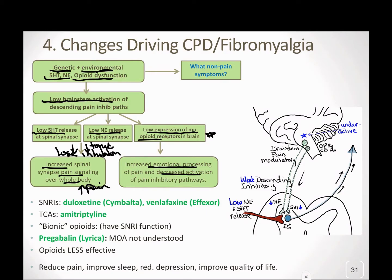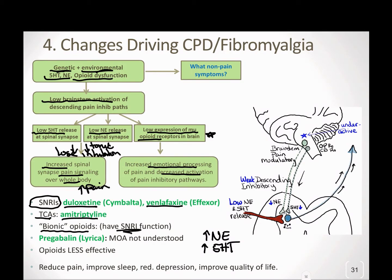Since the big problems here are going to be norepinephrine and serotonin, we have drugs exactly designed to increase those levels — our SNRIs: duloxetine (Cymbalta) and venlafaxine (Effexor). We also see that TCAs like amitriptyline increase serotonin and norepinephrine. There are some opioids like methadone that also have SNRI functions. And the drug pregabalin (Lyrica), not completely understood how it works, but it does seem to help with fibromyalgia. Because you don't have as many opioid receptors, opioids are less effective for fibromyalgia than for other types of pain.